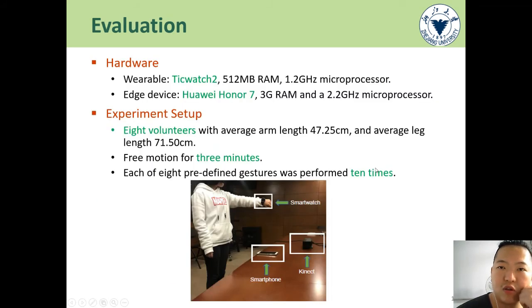Here we see the evaluation part. We test LimbMotion with the TicWatch 2 smartwatch, and we choose the Huawei Honor 7 smartphone as the edge device. Eight volunteers are recruited for experiments. At first, volunteers are asked to perform free motion for 3 minutes, then they perform 8 predefined gestures 10 times. During experiments, a Kinect V2 is used to capture the volunteer's motion as ground truth.